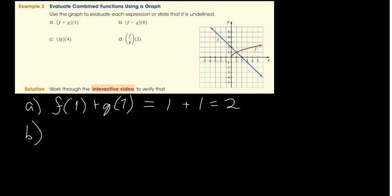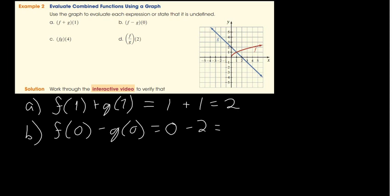For b, f minus g of 0 equals f of 0 minus g of 0. Looking at the graph, f of 0 appears to be 0. And g at 0, the blue line at x equals 0 — which is the y-axis — looks like it is positive 2. So it's 0 minus 2, which equals negative 2.